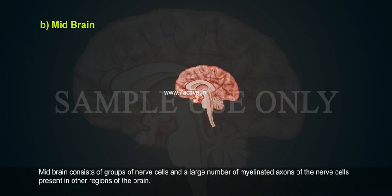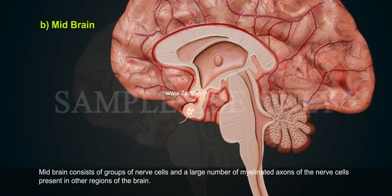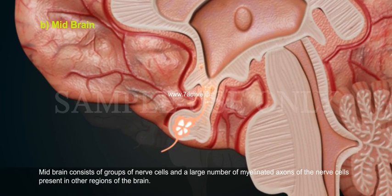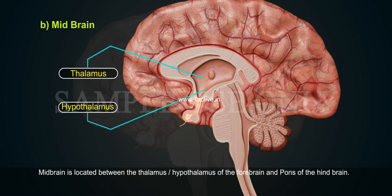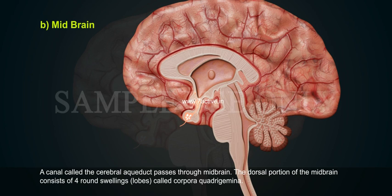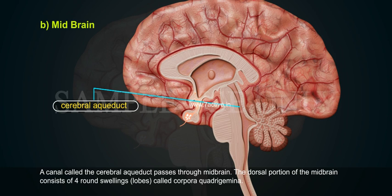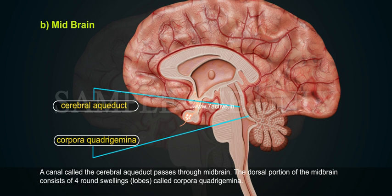Midbrain consists of groups of nerve cells and a large number of myelinated axons of the nerve cells present in other regions of the brain. Midbrain is located between the thalamus or hypothalamus of the forebrain and pons of the hindbrain. A canal called the cerebral aqueduct passes through the midbrain. The dorsal portion of the midbrain consists of four round swellings called corpora quadrigemina.